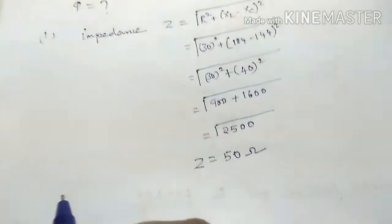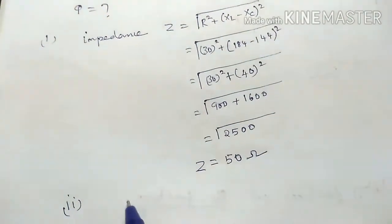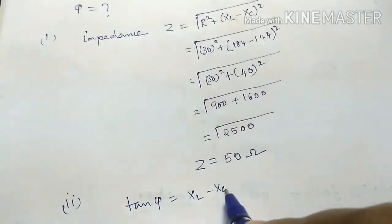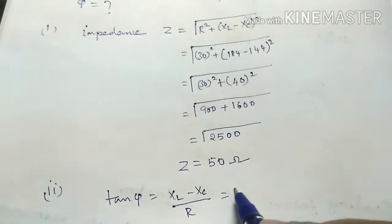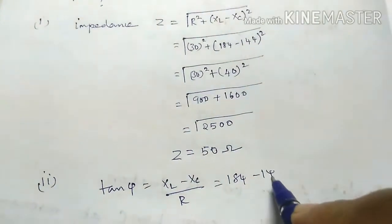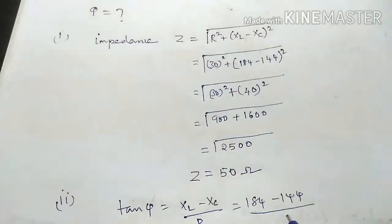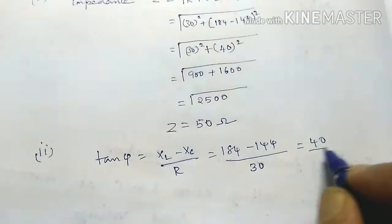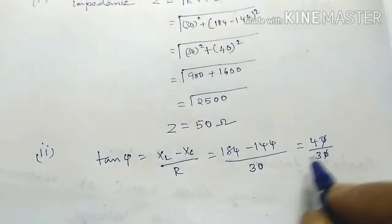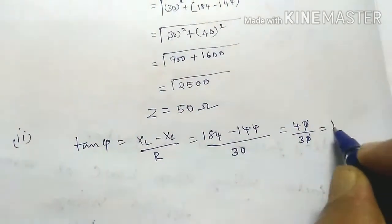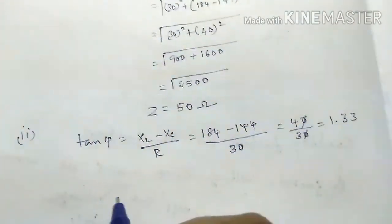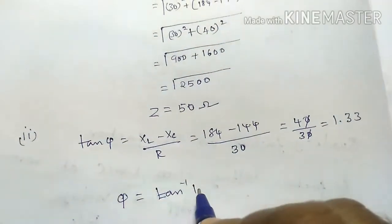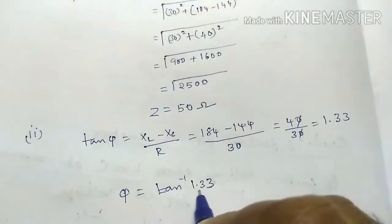At the end of the phase angle. Phase angle, the formula is tan φ equal to XL minus XC by R. XL is 184, XC is 144 and R is 30. Then subtract 40 by 30, 4 by 3. Then 4 by 3 is 1.33. Then φ is tan inverse.